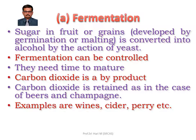The fermentation can be controlled in making wine — any type: white wine, red wine, rosé wine, sparkling wine, fortified wine such as sherry, and aromatized wine such as vermouth. The wine needs time to mature — one month, two months, six months, one year, two years, five years and so on. Carbon dioxide is a by-product; it can be retained in the case of beers and champagne or sparkling wine.